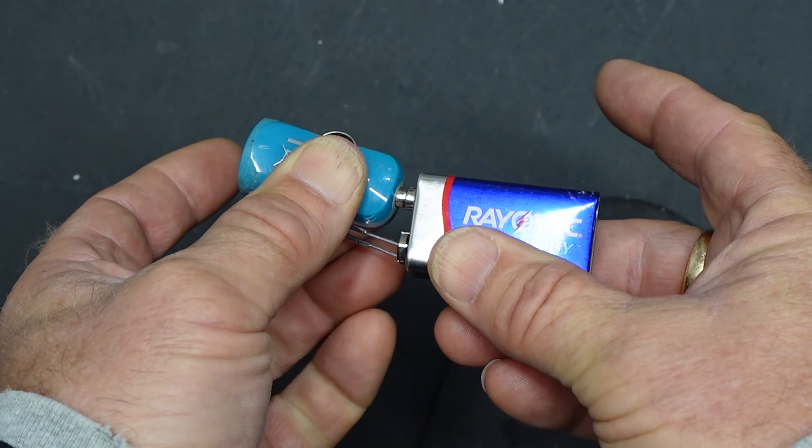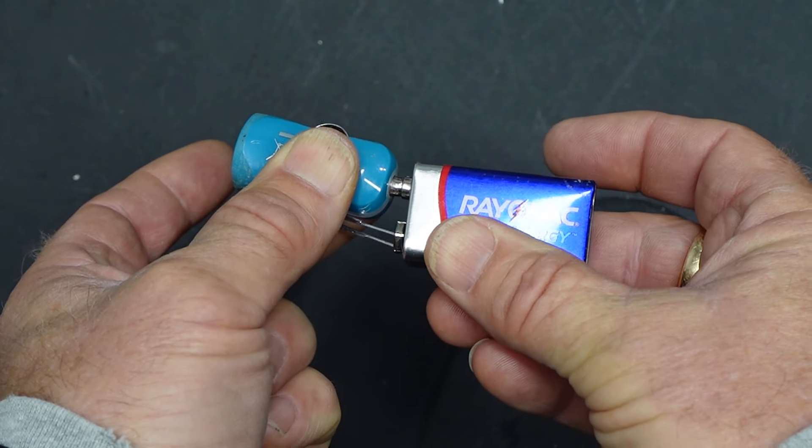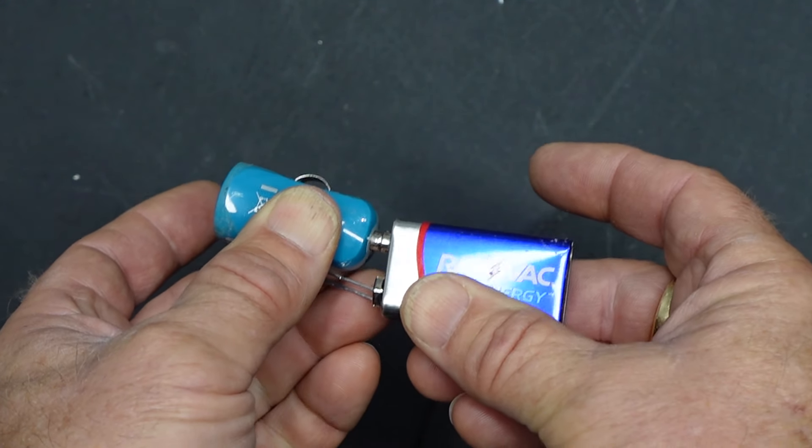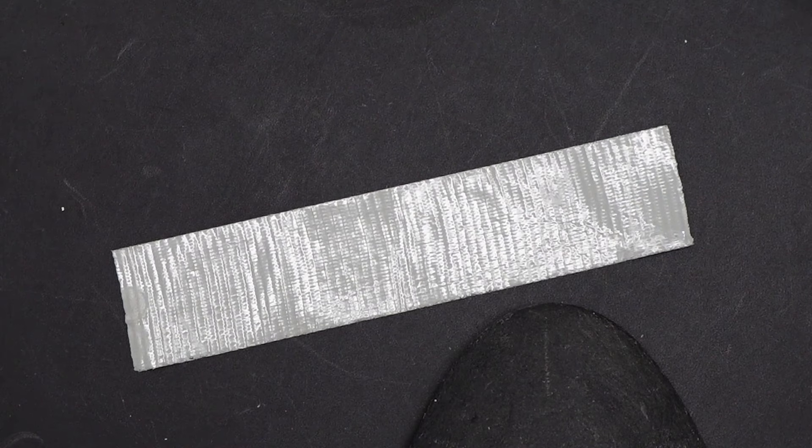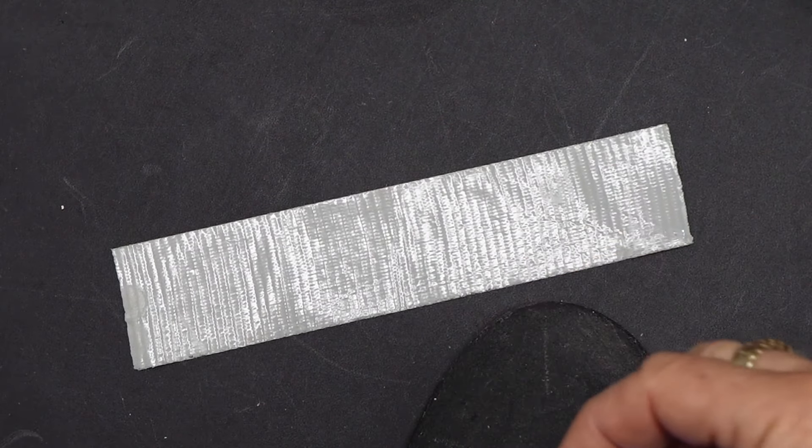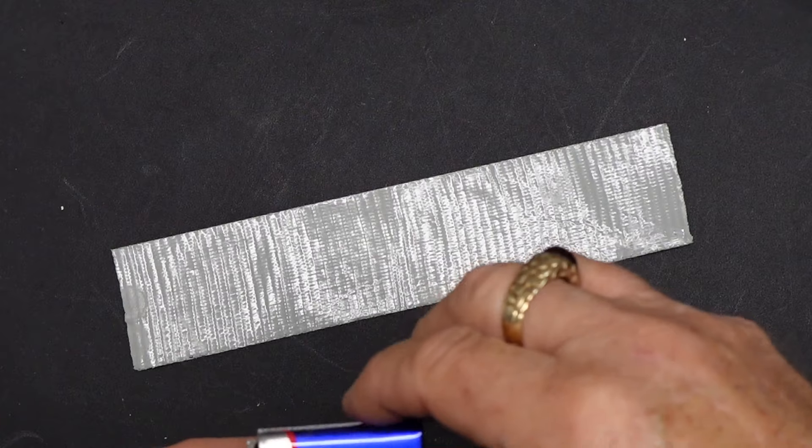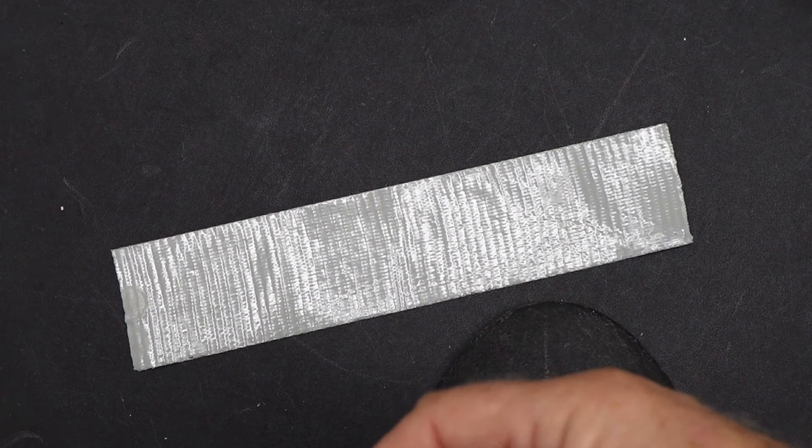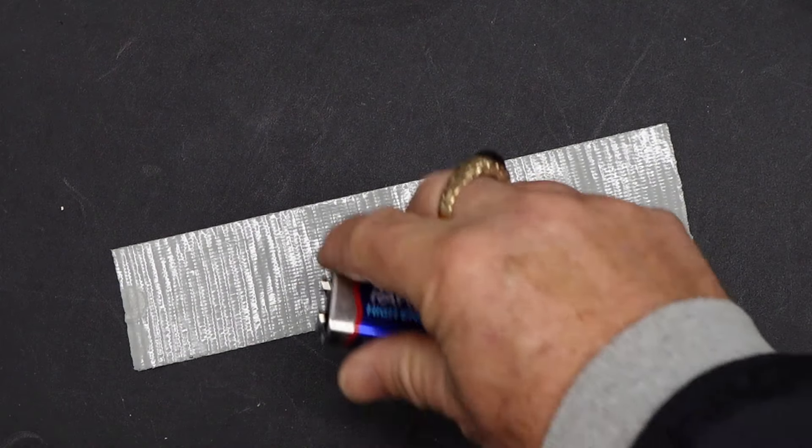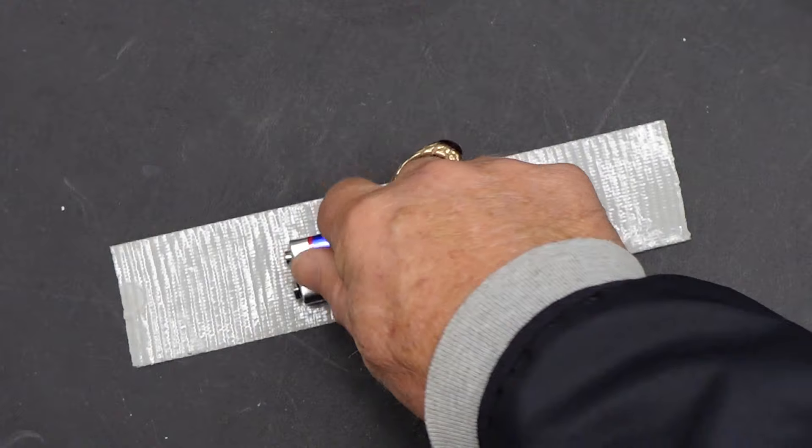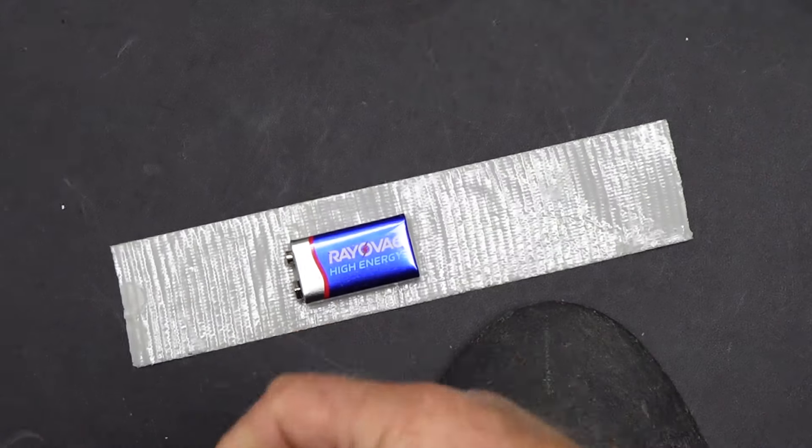If you happen to have duct tape it's good and sticky. Any other tape will do if you can hold it together long enough to make it work. To make yourself a hands-free one, all you need is a piece of duct tape. Rip it off to the appropriate length, stick your battery down, and press it firmly.